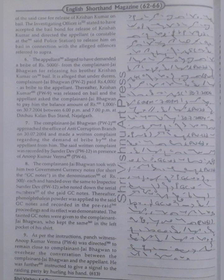Thereafter, Krishan Kumar (PW9) was released on bail and the appellant asked the complainant Jai Bhagawan to pay him the balance amount of Rs. 1000 on 30th July 2004 between 6 p.m. and 7 p.m. at the Chao Kala bus stand Nachavgad.